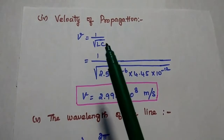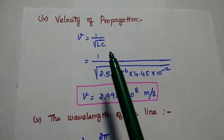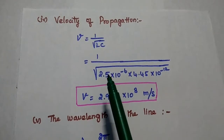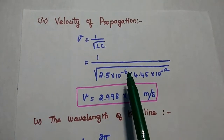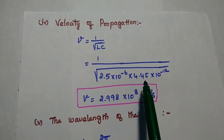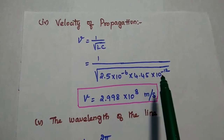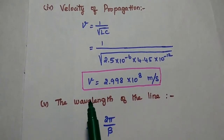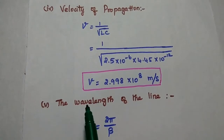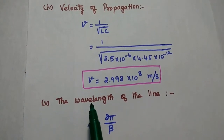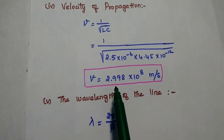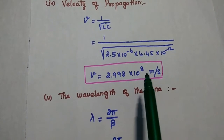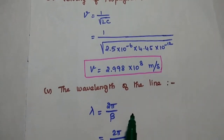Next is the velocity of propagation V, equal to 1 by the square root of LC. Substituting L as 2.5 into 10 to the power minus 6 and C as 4.45 into 10 to the power minus 12, we get the velocity of propagation for the dissipationless line as V equal to 2.998 into 10 to the power plus 8 meters per second.